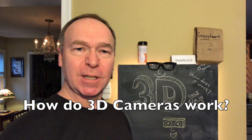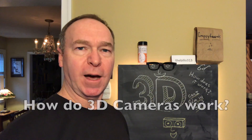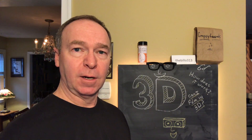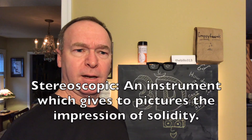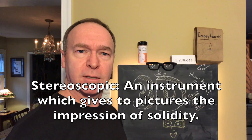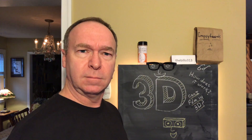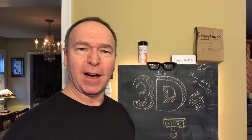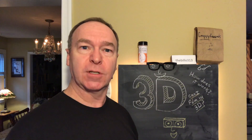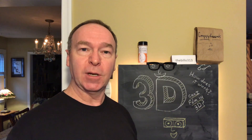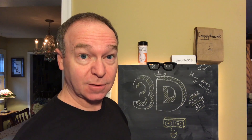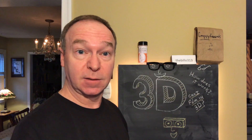The first thing you need to understand is that we see the world in 3D because we have two eyes. This is called stereoscopic vision. Stereoscopic is from Latin — stereo meaning like a sound system, and scopic meaning optics, so it's like you can see music. Your two eyes show you the world from two slightly different perspectives, and your brain uses them to form a three-dimensional image of the world. Hence, 3D.